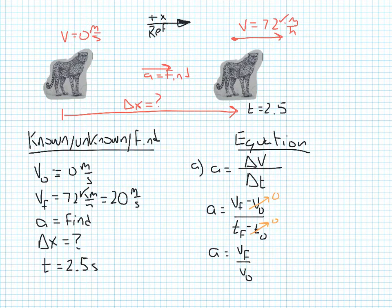Now when I look at a change in velocity, change in velocity is really a final velocity minus an original velocity. Since my original velocity is zero, it's going to actually cancel out, leaving me with just Vf.